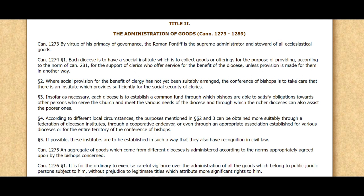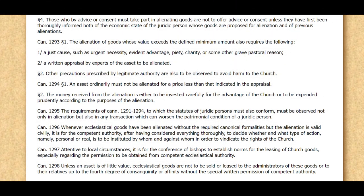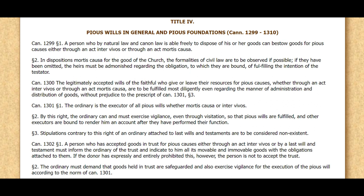It is for the ordinary to exercise careful vigilance over the administration of all goods belonging to public juridic persons subject to him. Those who must advise or consent in the alienation of goods — notice that word 'alienation,' as in illegal alien or a lien on something — are not to offer advice unless thoroughly informed of the economic state of the juridic person. The alienation of goods whose value exceeds a defined minimum requires a just cause such as urgent necessity, evident advantage, piety, or charity; a written appraisal by experts; and other precautions to avoid harm to the church. An asset ordinarily must not be alienated for less than the appraised price. A person able to freely dispose of goods can bestow them for pious causes either through an act inter vivos — meaning between living persons — or through an act mortis causa.